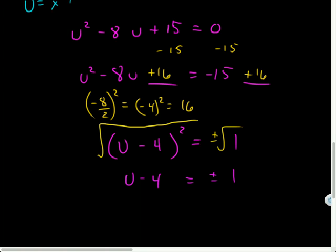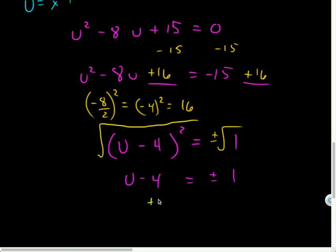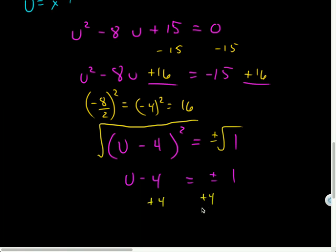If I add 4 to both sides, I will get U equals, and I get two answers. 4 plus 1 is 5 and 4 minus 1 is 3.